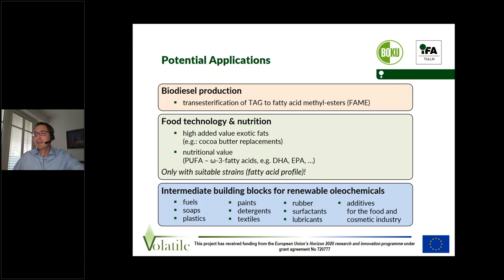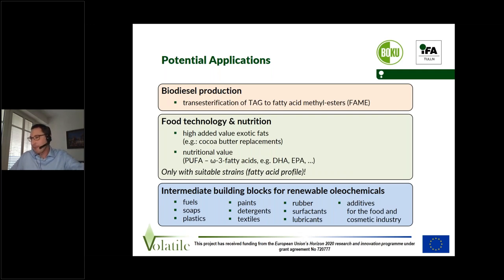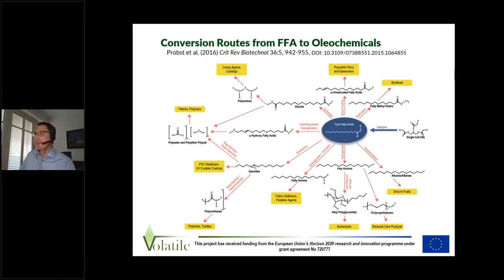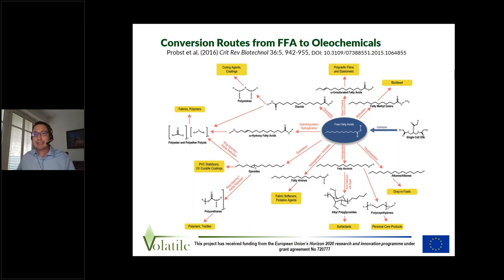What we are mainly focusing on is intermediate building blocks for renewable oleochemicals. There are some logical ones like soaps, detergents, surfactants, and compounds for cosmetics. I'm showing this graph from a review by Probst and co-workers — basically, we can use chemistry to produce all the compounds that we currently produce from hydrocarbons, based on fatty acids. This doesn't mean it always makes sense or is always sustainable, but it shows the potential to go in many directions from these kinds of compounds.